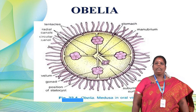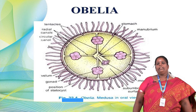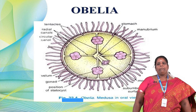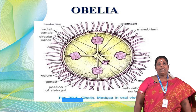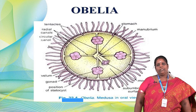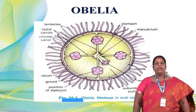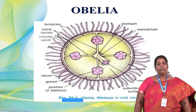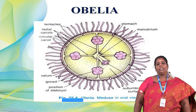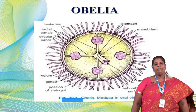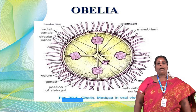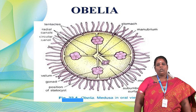Now for the medusa structure overview: the medusa is important in sexual reproduction. The medusa has a mouth region and a manubrium at the base of the mouth, which leads to the stomach region. It also has ring-like tentacles, radial canals, and circular canals. Radial symmetry and circular symmetry are present. The medusa also has a velum, gonads, and statocysts on the sub-umbrella surface. These are the external structures of the medusa.